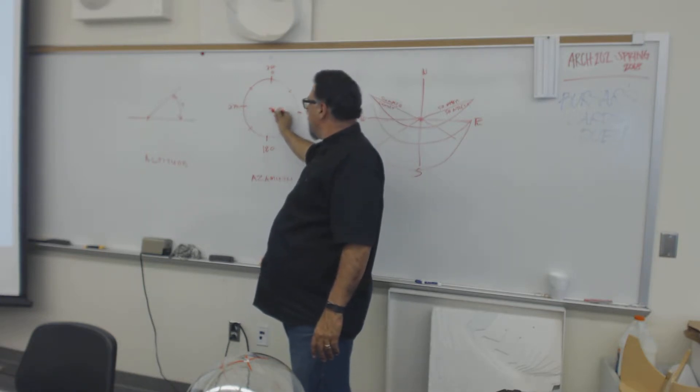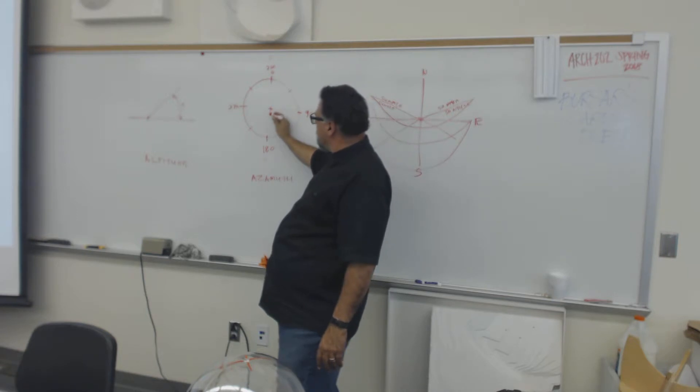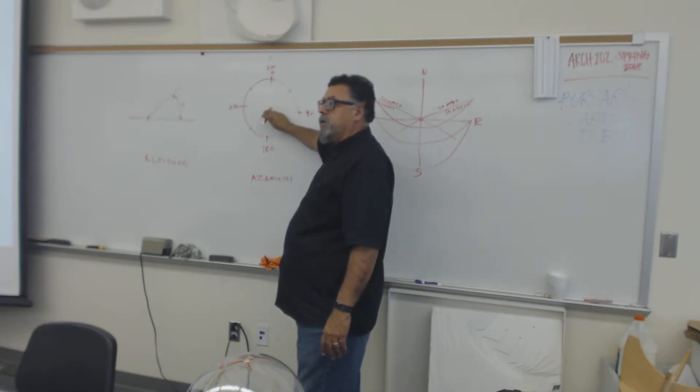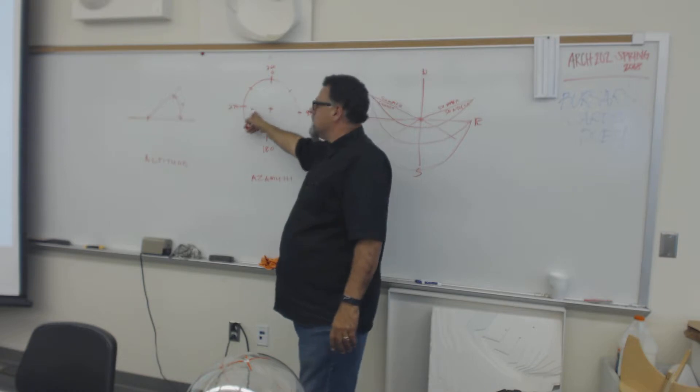So then later, it'll rise and come across the southern hemisphere. And at solar noon, which is halfway between sunrise and sunset, it'll be at a different altitude.